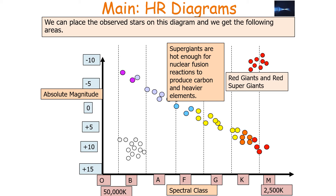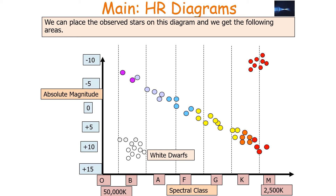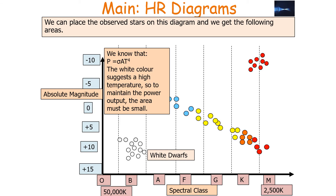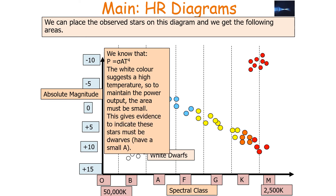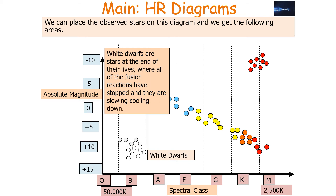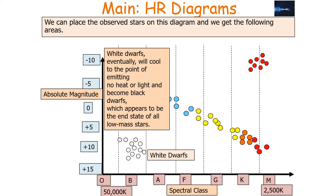The final group is the white dwarfs. This region suggests that these stars are hot but dim. Using P = σAT⁴, the white colour suggests a high temperature, so to maintain the power output the area of these stars must be quite small. White dwarfs are stars at the end of their lives where all the fusion reactions have stopped and they are slowly cooling down. They will eventually cool to the point of emitting no heat, light, or radiation, and become black dwarfs — which appears to be the end state of all low-mass stars.